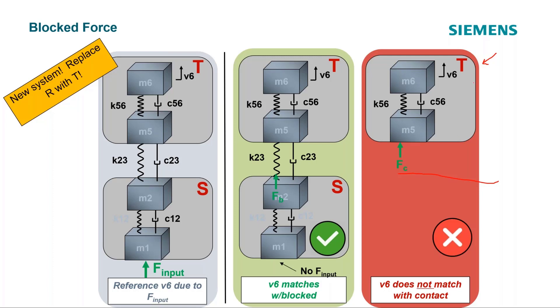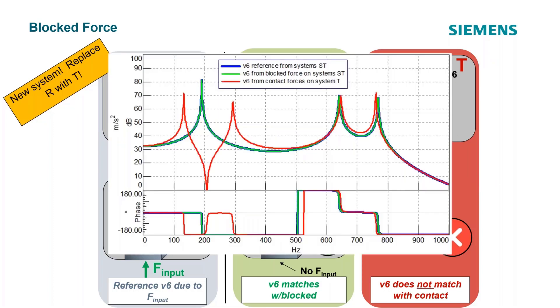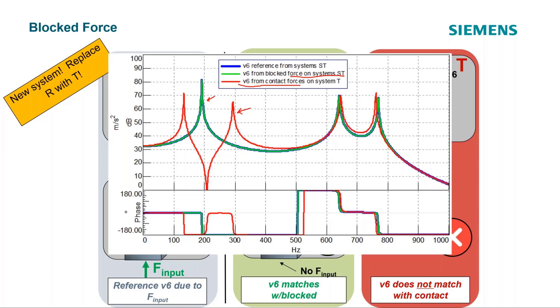And you can't apply it to the new system. But the blocked force does work. So the blocked force on the combined system, you got green and blue, and those match right on top of each other. And then the contact force applied to system T alone does not match at all. It was nice to use these simpler mass spring representations, but this basically applies to any complex product.